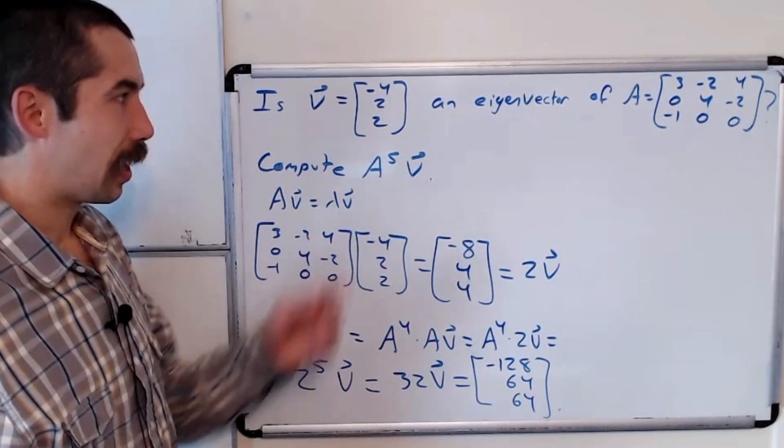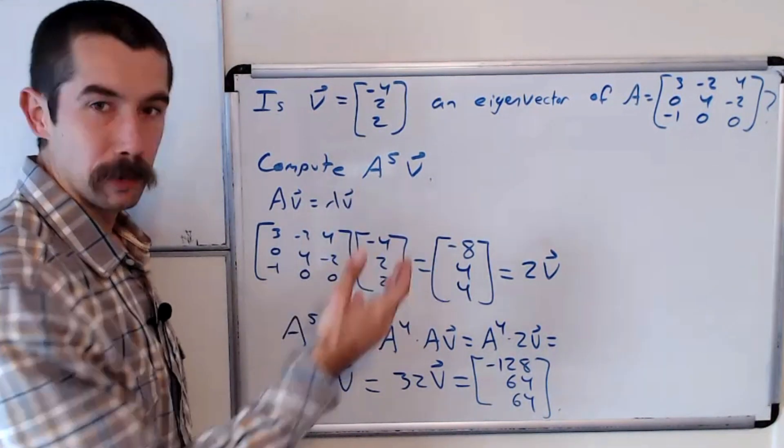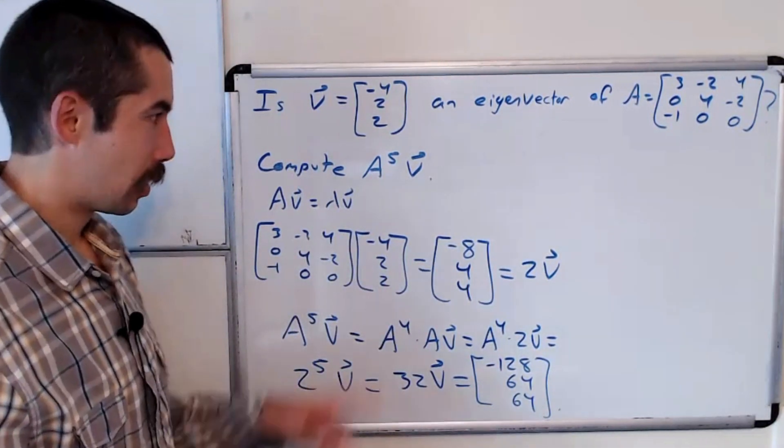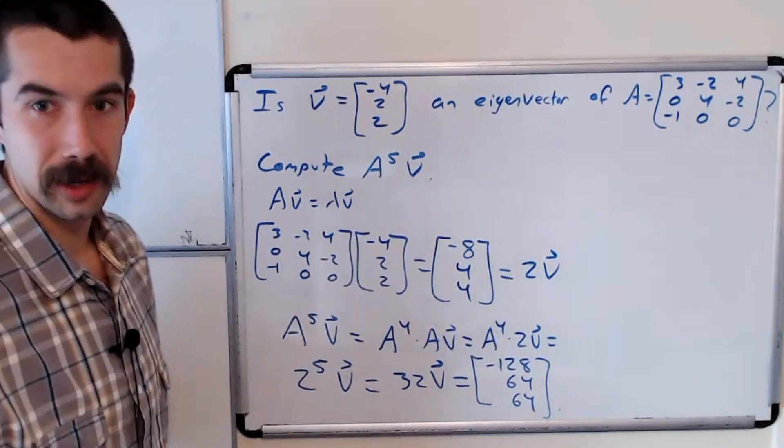So if you have an eigenvector, it's really easy to do matrix multiplication with that vector. So it's just 2 to the 5th times the vector.